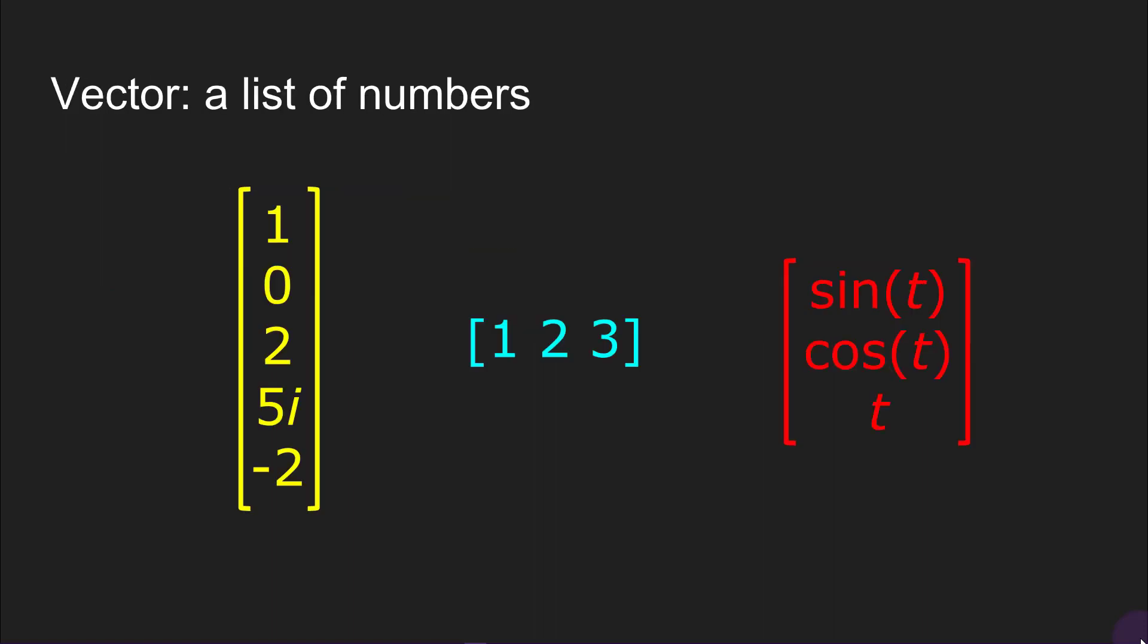Linear algebra is really all about vectors and matrices and how to use them. A vector is a list of numbers. It could look like this or this or this, so vectors can also be a list of functions.